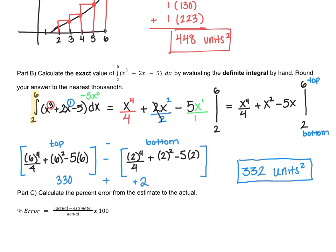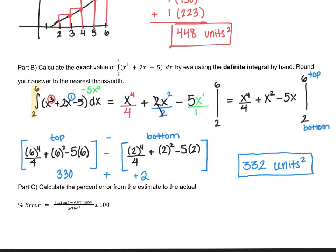So what I'd like to do now with part C is actually calculate the percent error. So remember, the percent error is the actual, which is 332, minus the estimate, the Riemann sum, 448, that absolute value, of course, divided by the actual of 332, and then multiplying that by 100. So take a minute, plug that into the calculator, and then hit resume when you're ready for the answer.